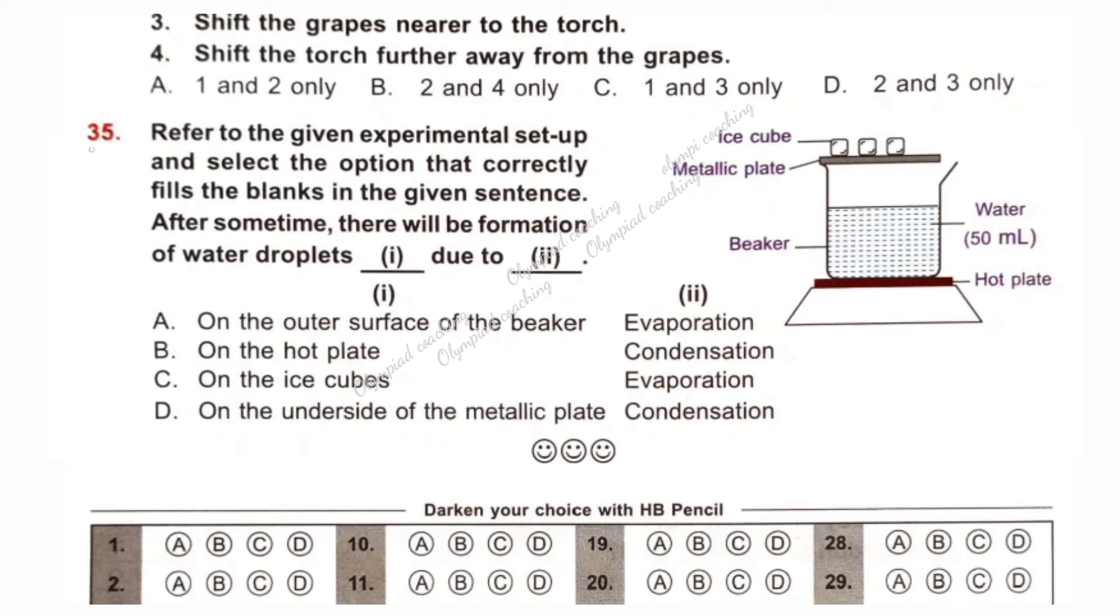Question number 35. Refer to the given experimental setup and select the option that correctly fills the blanks in the given statement. After some time there will be formation of water droplets which is 1 due to that is 2. This is a beaker and this is a hot plate. It means after some time water will boil. Water boils, it means formation of water vapor. Here is ice cube. This is a metallic plate. So this metallic plate is cooled due to ice cube. When water vapor touches this metallic plate, water droplets will be formed. The process is called condensation. Formation of water droplets is condensation. So 1 is water droplets forms on the underside of the metallic plate. This is due to condensation. So 2 is condensation. Option D is correct.